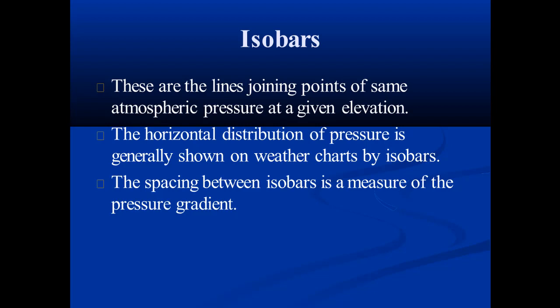Next we have isobars. Isobars are the lines joining the points of same atmospheric pressure at a given elevation. The horizontal distribution of pressure is generally shown on weather charts with the help of isobars. The spacing between isobars is a measure of the pressure gradient.